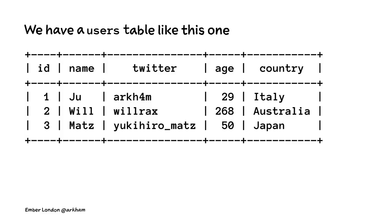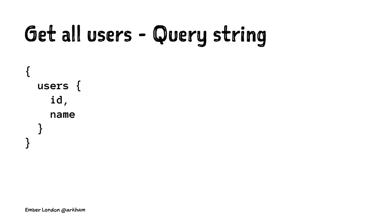Let's start with a very simple example of how GraphQL works. If we have a table called users with ID, name, Twitter handle, age, and country, there's a very easy way to get all the users in this table. GraphQL has only one endpoint, and you send a payload to it — it's just a string.